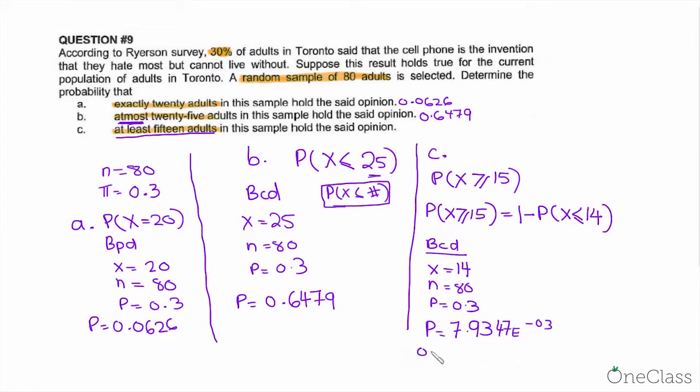This means 0.0079347. So this answer is probability of X less than or equal to 14. Therefore, to find probability of X greater than or equal to 15, we do 1 minus the probability we just found, which is 0.0079347, and we get 0.99207. This is our answer to C, 0.99207.